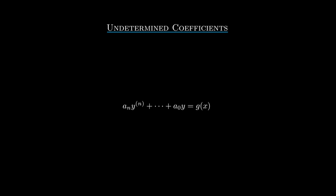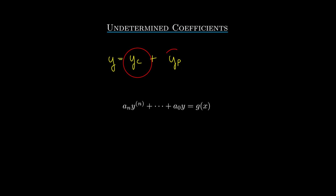To solve a general linear differential equation we have to solve two independent problems. We first find the complementary function, which is the general solution to the associated homogeneous equation, and then find a particular solution. From these two ingredients the full solution is simply their sum. Previous videos have dealt with solving homogeneous equations; finding particular solutions is the topic of today's video.